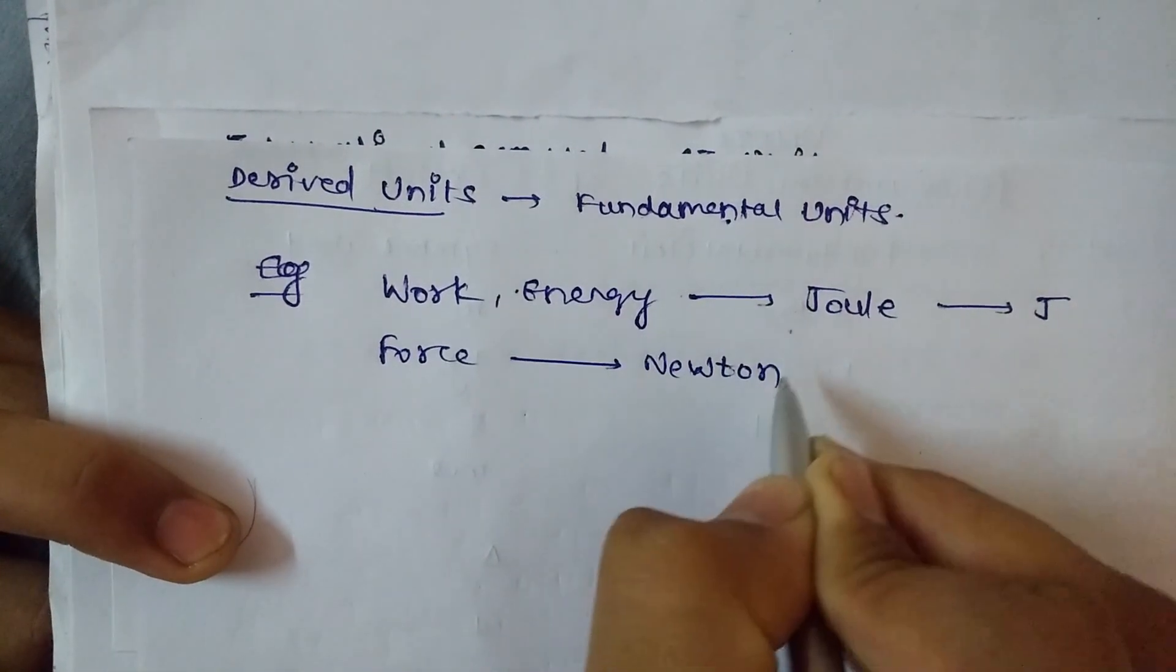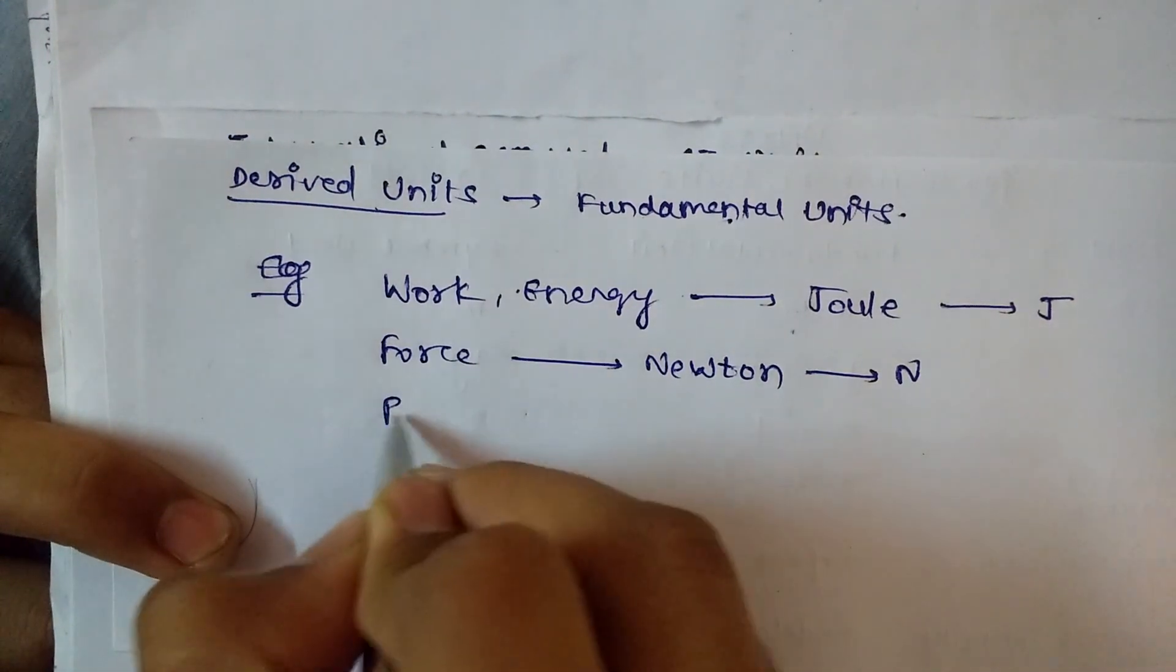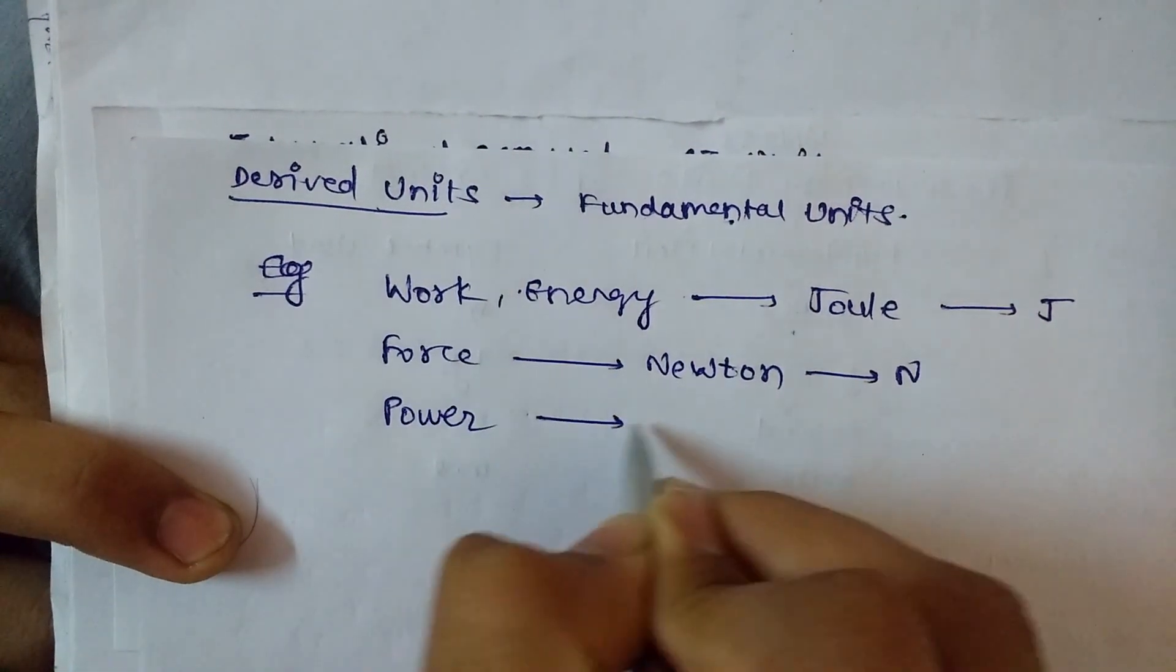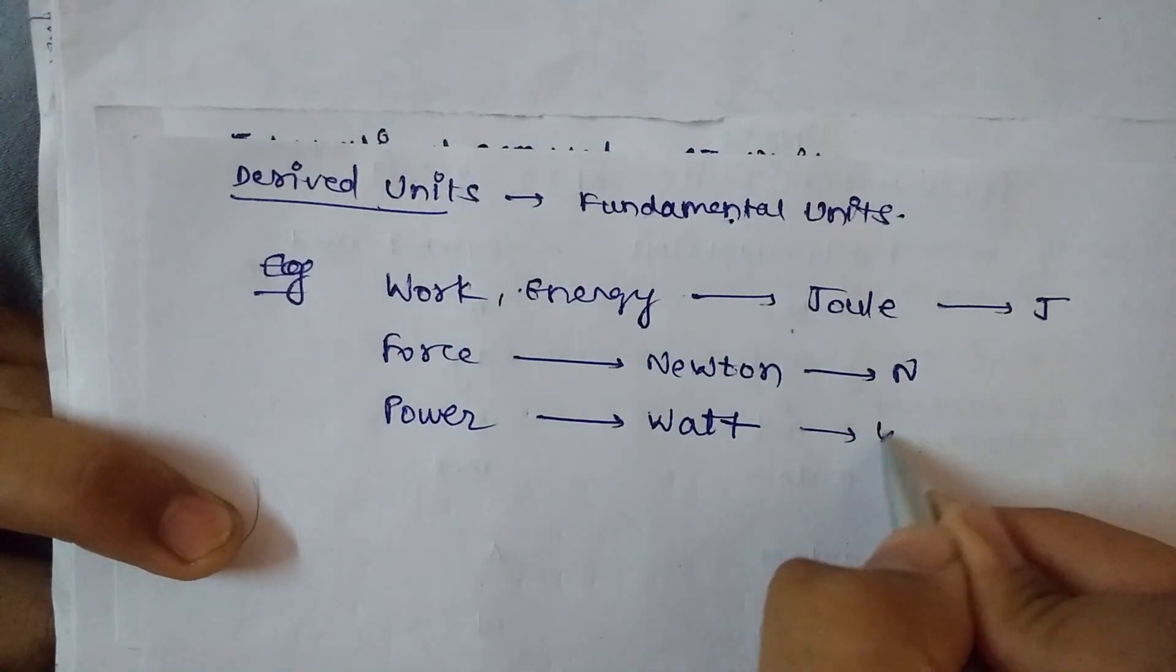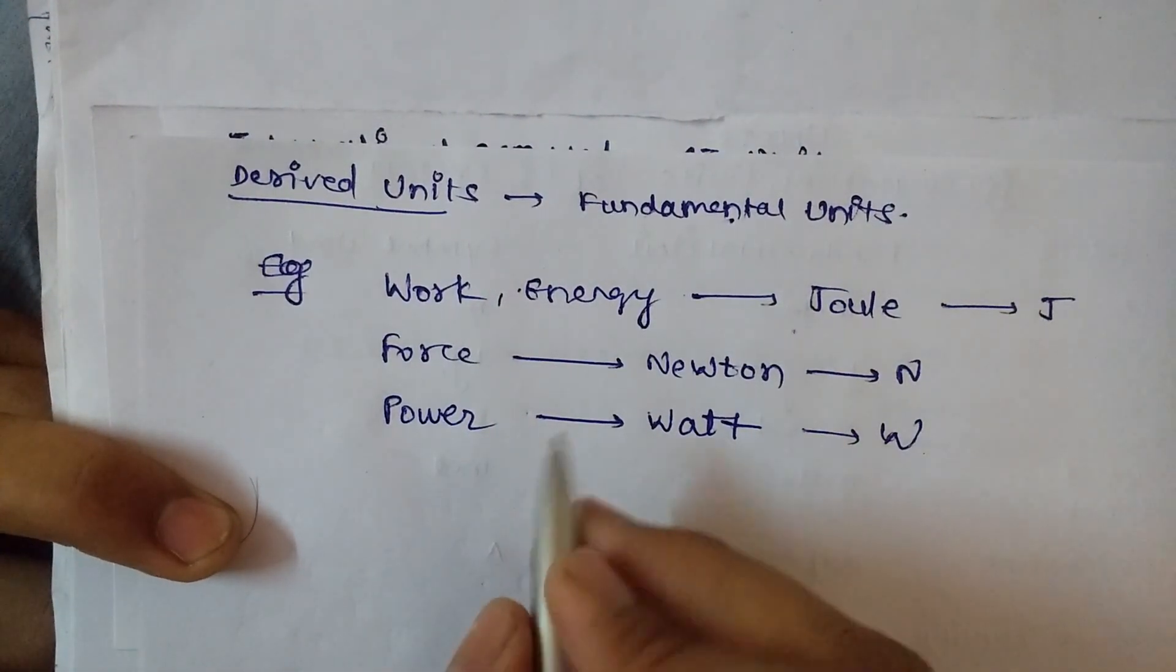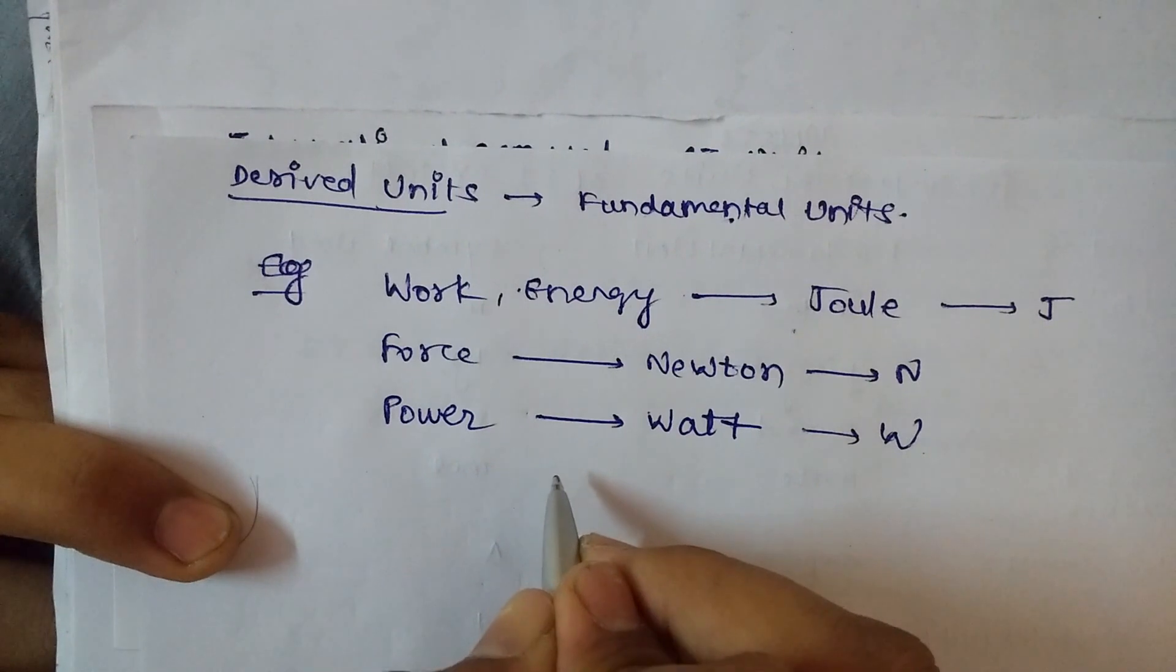Another example is power, whose SI unit is watt with symbol W, and so many other physical quantities are also measured in derived units.